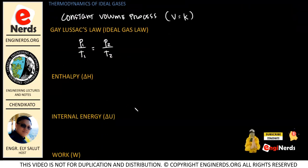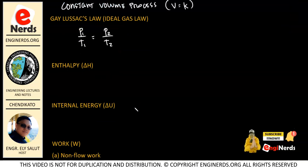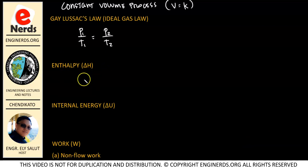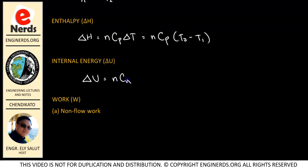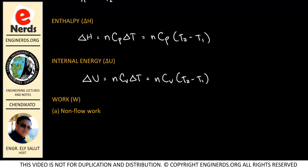The same as in our previous discussion about enthalpy, we will still be using the same formula. For enthalpy, delta H is equal to N·CP·delta T, also written as N·CP·(T2 minus T1). The same goes for internal energy: delta U is equal to N·CV·delta T, or N·CV·(T2 minus T1). We will be using these same equations for the constant volume process.